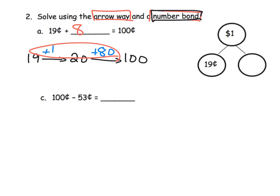What did we add all together? We added 81 cents. Our number bond will have a dollar here, then 19 cents as one of the values being added, and 81 cents is the other portion of that number bond.